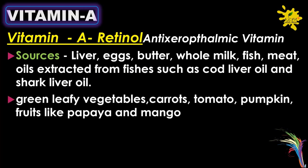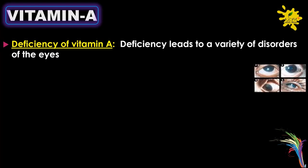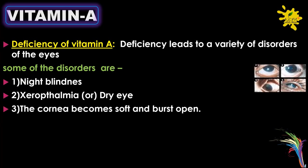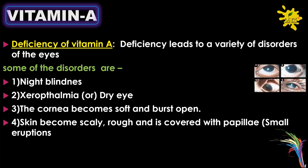Plant sources of Vitamin A include green leafy vegetables, carrots, tomato, pumpkin, and fruits like papaya and mango. Deficiency of Vitamin A leads to a variety of disorders of the eyes, including night blindness and xerophthalmia (dry eye).